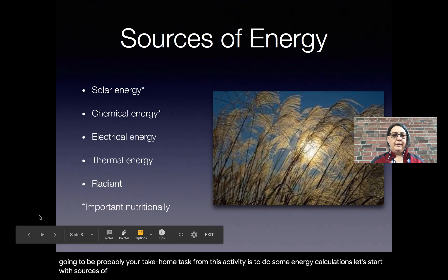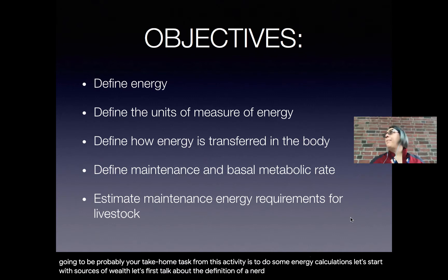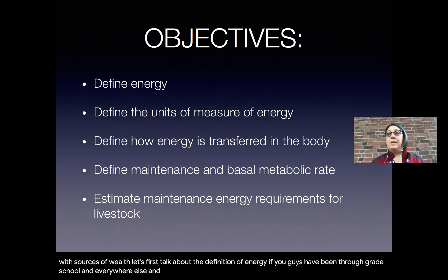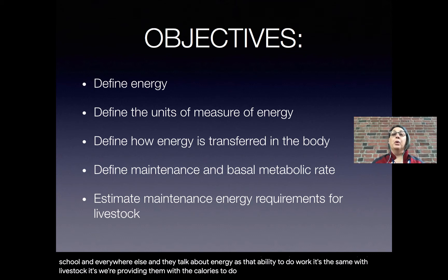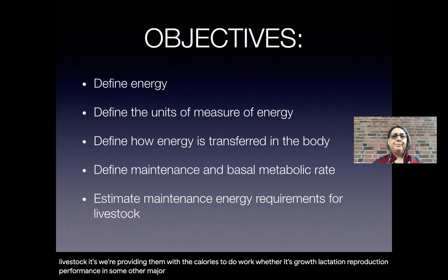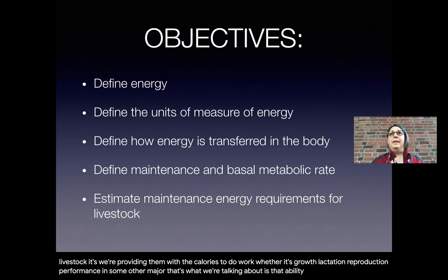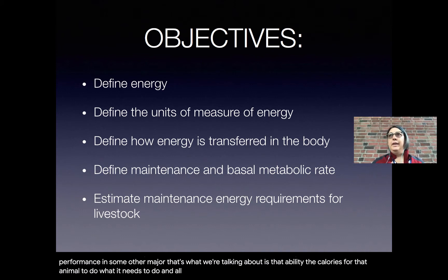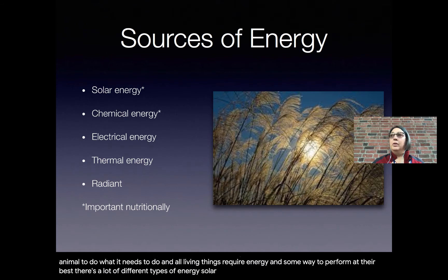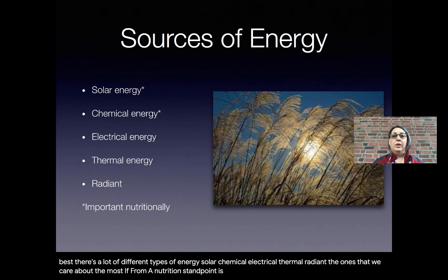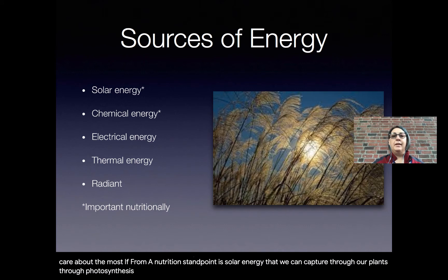Let's start with the definition of energy. If you've been through grade school, you've heard energy defined as the ability to do work — it's the same with livestock. We're providing them with the calories to do work, whether it's growth, lactation, reproduction, or performance in some other measure. All living things require energy to perform at their best. There are many types of energy — solar, chemical, electrical, thermal, radiant — but from a nutrition standpoint, we care most about solar energy captured through photosynthesis and converted into chemical energy.